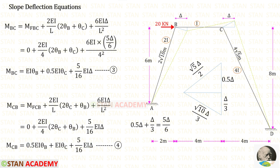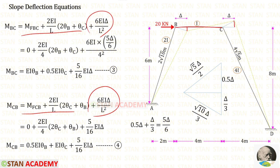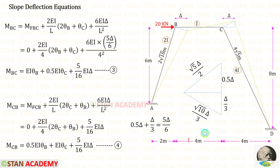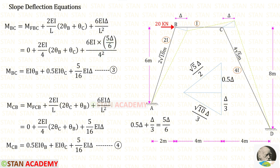Now let us make the slope deflection equations for member BC. In this member also there is displacement, so we have to add the sway moments to the equations. Since the sway occurs towards the right side, in the horizontal member BC the sway moments should be taken as positive. The length of BC is 4. We know that we have to add the two displacements, and when we add them we will get 5 delta upon 6. So instead of delta we apply 5 delta upon 6. Finally, for member BC we have made two equations.